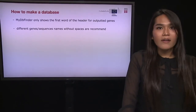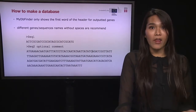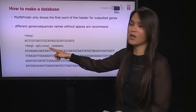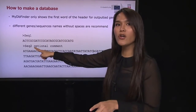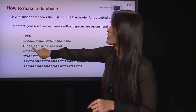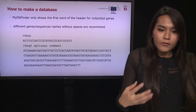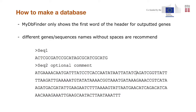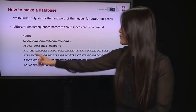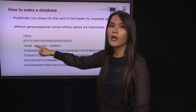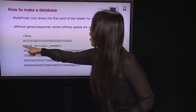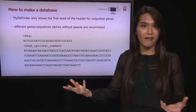MyDB FIDER only shows the first word of the header as the output gene name. For example, if your unknown sequence matches sequence number two, it only shows 'sequence' — it breaks when it finds a space. We recommend using sequence names without any spaces; use an underscore instead. Then the program will show all the header information in the output page.